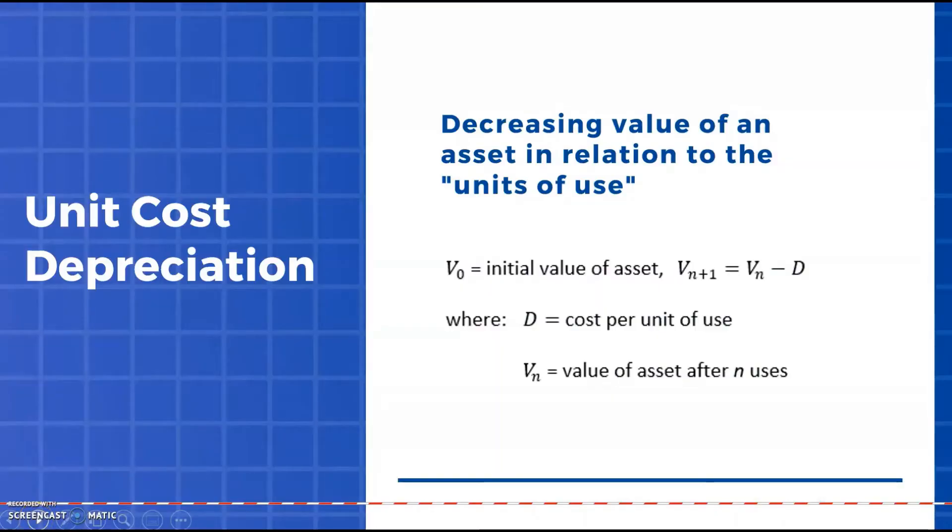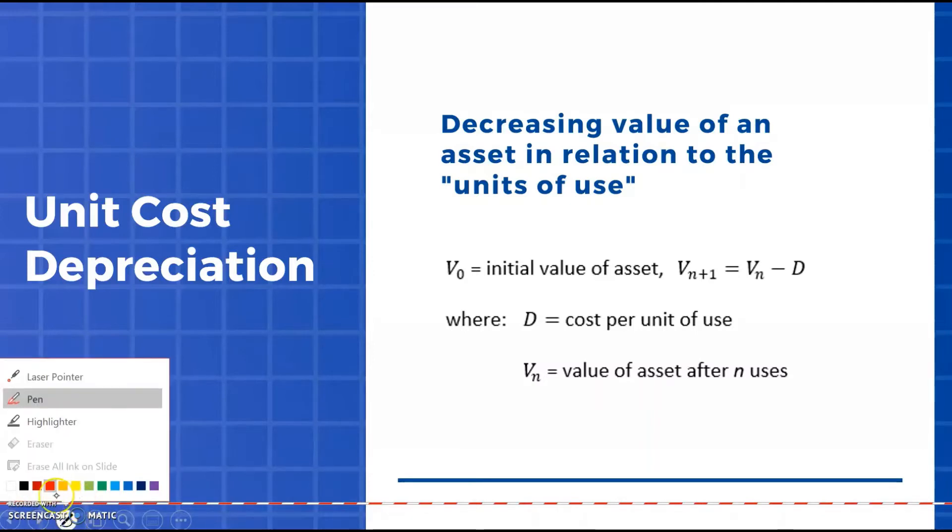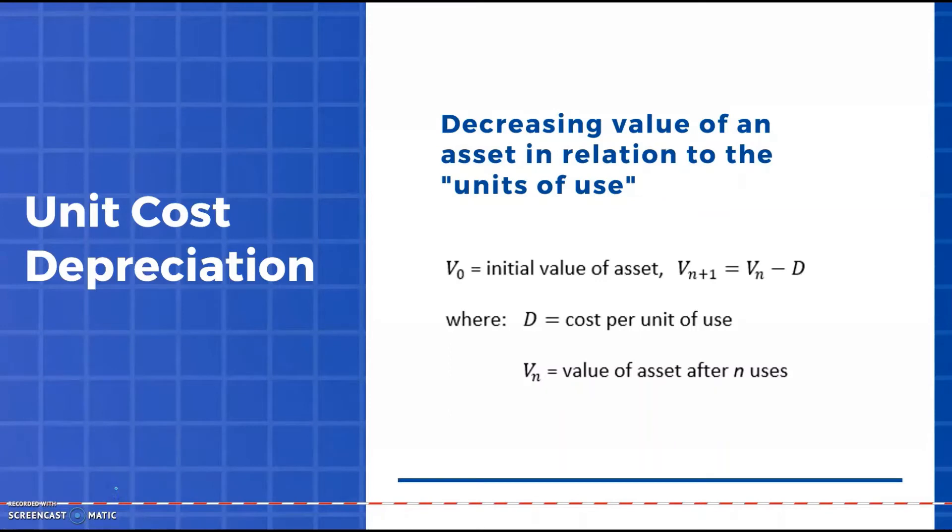First up we're looking at unit cost depreciation. Here we're talking about depreciation of an asset in relation to its units of use. We always have an initial value and then a recurrence relation in the form where the next value is given by the current value minus the depreciation amount. Generally speaking, that depreciation amount D is the cost per unit, but we'll look at some different types of examples that we tend to see in the exams.